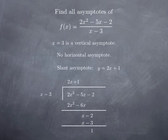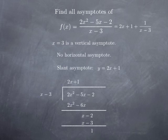The quotient from the long division gives us the equation of the asymptote. In terms of the function f, this means f can be rewritten as 2x plus 1 plus 1 over x minus 3.